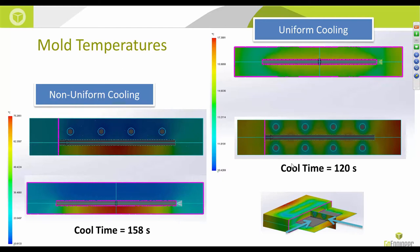This slide compares mold temperatures for the non-uniform versus uniform cooling layout. We took cross-sections at the post-processing stage to study temperature distribution. In the uniform cooling case, you have a uniform temperature distribution across the mold in the XY and YZ planes. The temperature at the end of the cooling process is about 17°C.